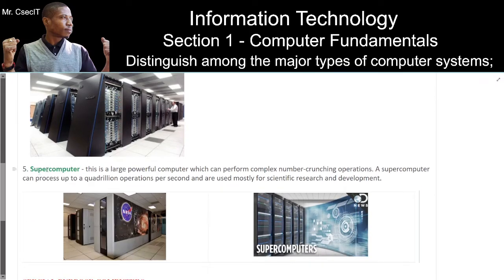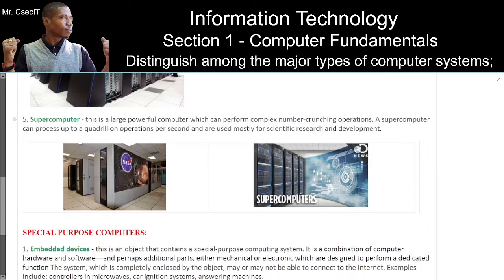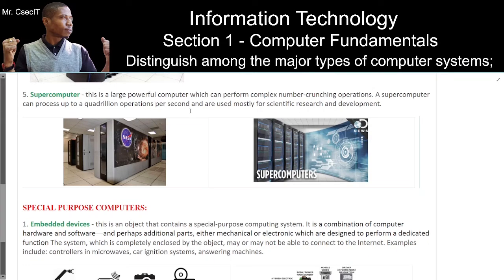Number five: supercomputer. This is a large, powerful computer which can perform complex number-crunching operations. A supercomputer can process up to a quadrillion operations per second and is used mostly for scientific research and development.